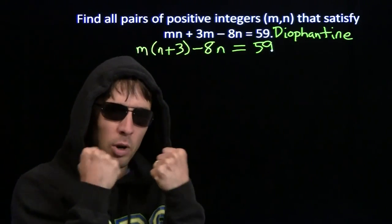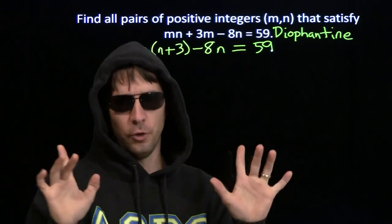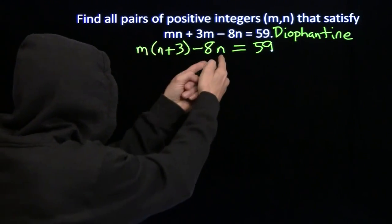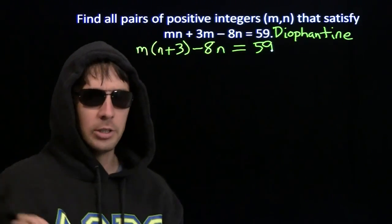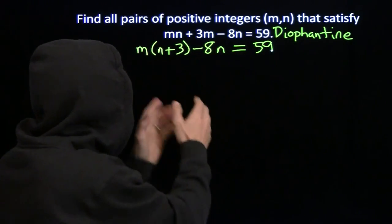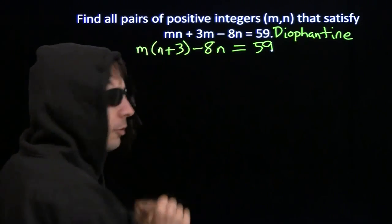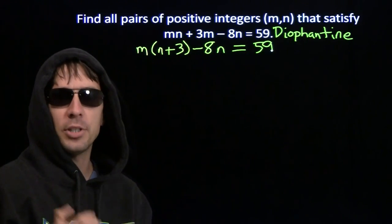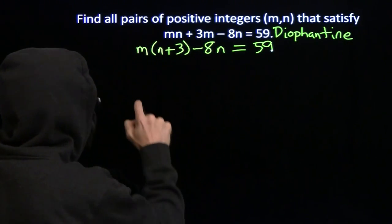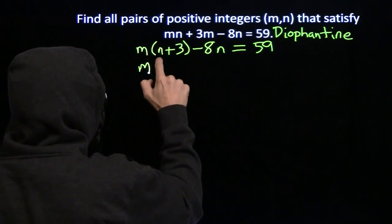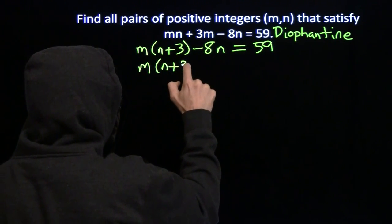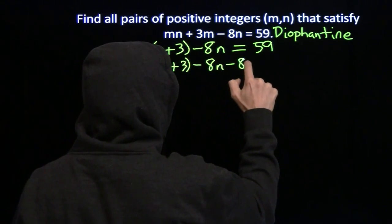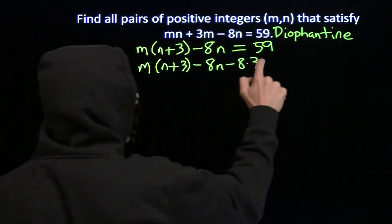So now I'm going to break out one of my favorite strategies, which is wishful thinking. Now, I would like to be able to factor more over here. And if this n were to magically turn into an n plus 3, then I could factor out an n plus 3 from the two terms. So I wish really hard to turn that into an n plus 3, and I see how to make my wishes come true. I can get an n plus 3 out there if just I have a minus 8 times 3 to factor the minus 8 out of.